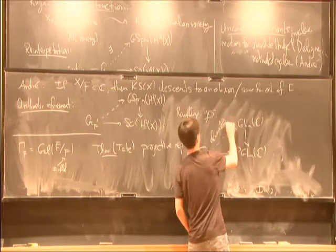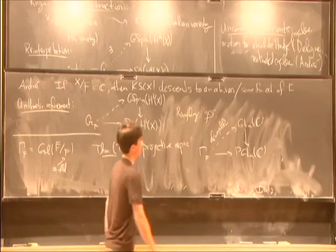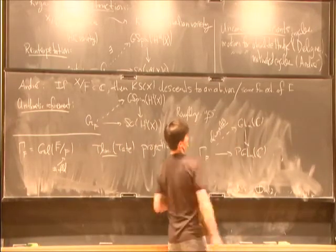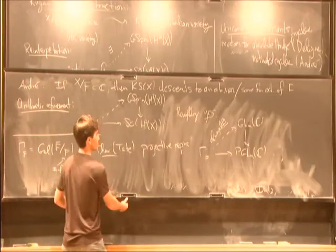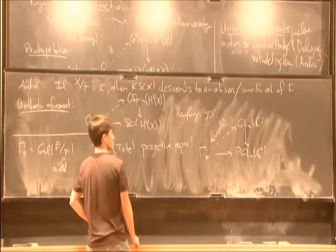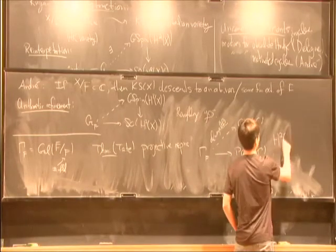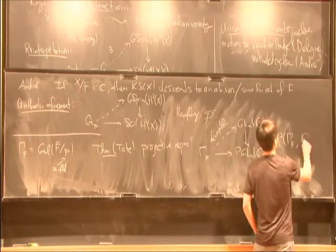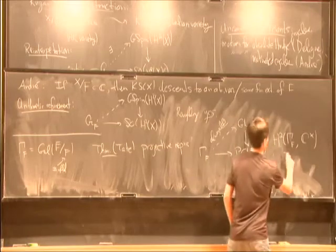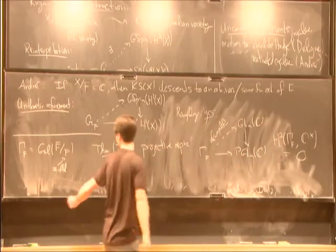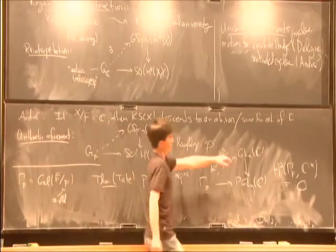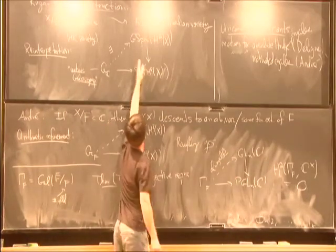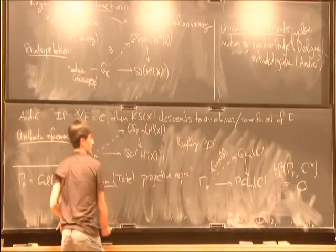There's an old theorem of Tate that says projective representations of this Gal_F always lift to honest representations. In general, that's not true for a group. If you take a finite group, there will be obstructions to getting lifts like this. It's an old theory due to Schur. But what Tate's theorem says is that Schur obstructions, which live in a homology group like this, actually vanish.